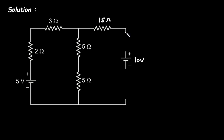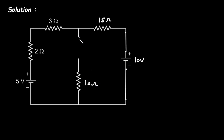Now joining the circuit properly, we can see that the two 5 ohm resistors are connected in series, giving simply 10 ohm. We need to find the current through the 2 ohm resistor, so we keep it separate from the 3 ohm rather than combining them into 5 ohm, so we can track the current through that branch.